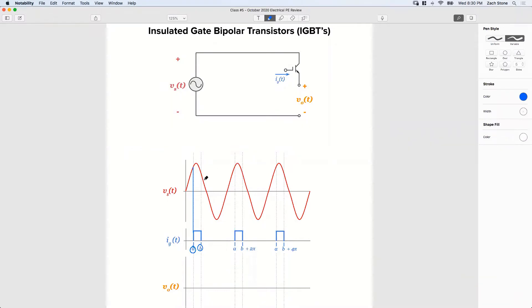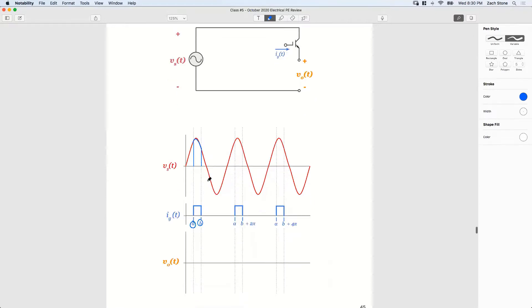So now when we turn off the gate current, what happens? The thyristor opens. So the output, I'm going to trace this a little better. The output is going to look like this. Here we go. So here's our output.